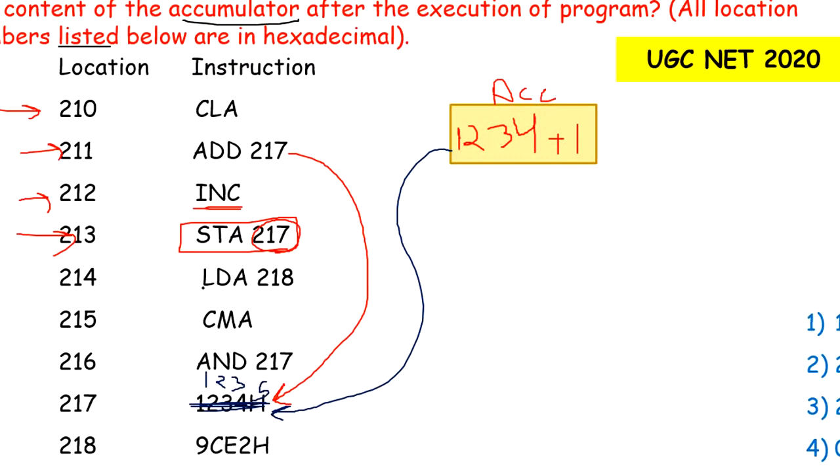Next instruction is LDA 218. Load accumulator with content of location 218. At 218 what content do we have? At 218 we have 9CE2H. H means hexadecimal. So whatever is in the accumulator gets deleted and replaced with the content at 218, which is 9CE2.